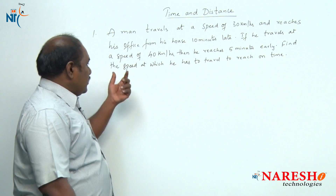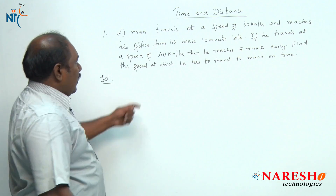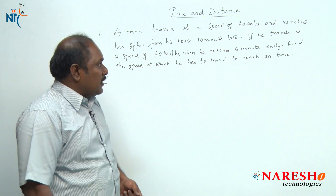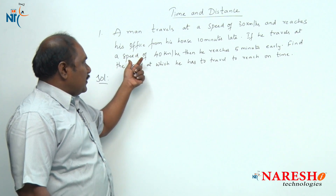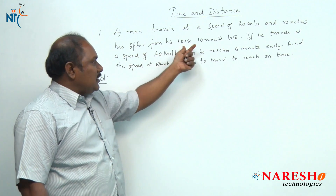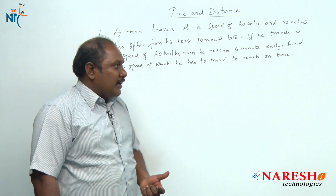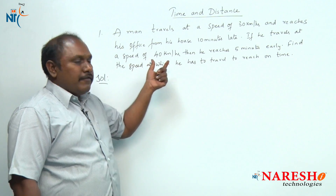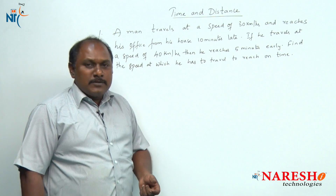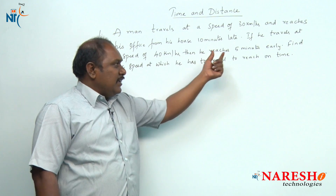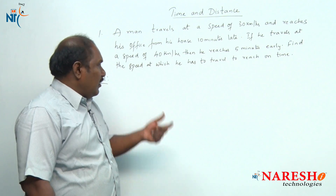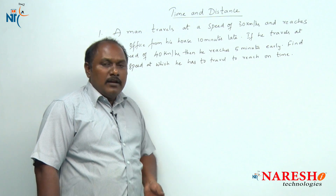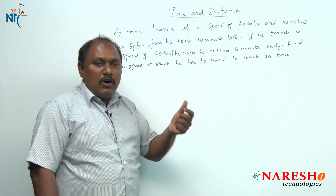Now let us look into the first question. A man travels at a speed of 30 kilometers per hour and reaches his office from his house 10 minutes late. If he travels at a speed of 40 kilometers per hour, then he reaches 5 minutes early. Find the speed at which he has to travel to reach on time.